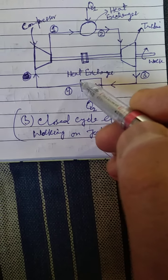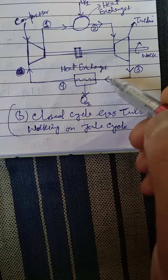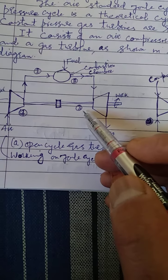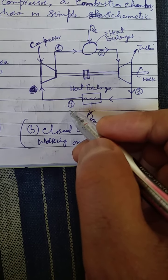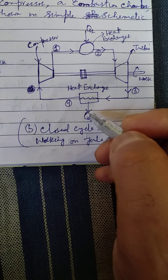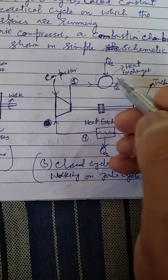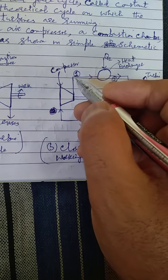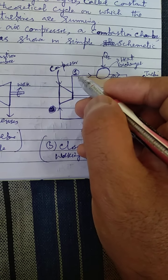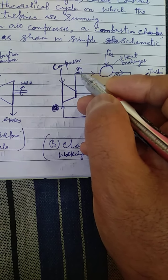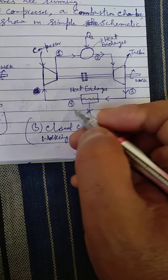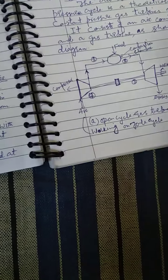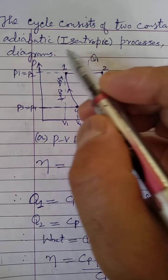In the closed cycle gas turbine, a heat exchanger is added. Point 3 is before the turbine and after the combustion chamber, and the heat exchanger comes after the turbine. Heat rejected from the heat exchanger is Q2, and heat given to the combustion chamber is Q1. In the cycle: point 1 is after the compressor and before the combustion chamber; point 2 is between the turbine and heat exchanger; point 3 is after the turbine; point 4 is after the heat exchanger. The PV and T-S diagram shows the cycle consists of two constant pressure processes and two reversible adiabatic (isentropic) processes.